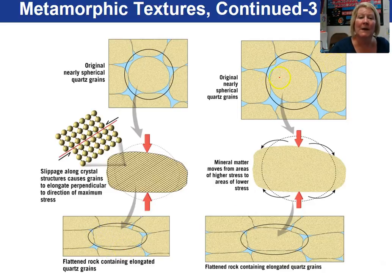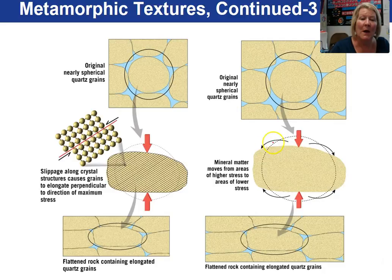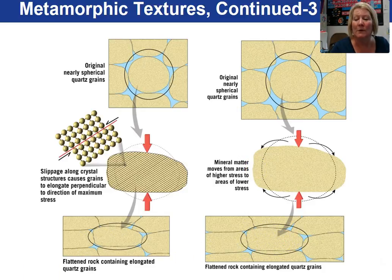In another example of a spherical quartz grain, here we have the actual mineral matter moving from the high stress area on top and recrystallizing to the lower stress areas on the right and left sides. That will also create an elongation in that rounded grain.